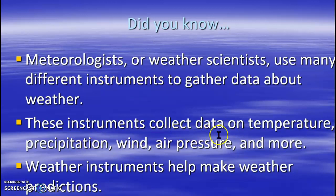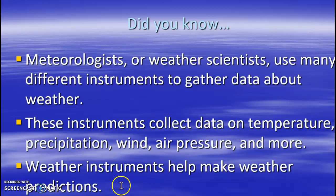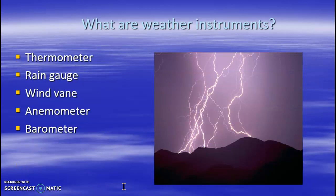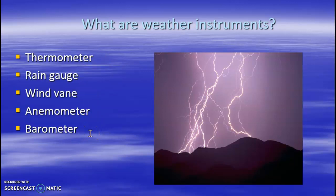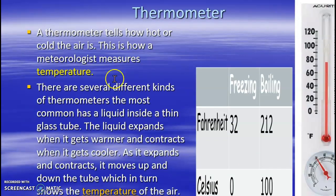These instruments collect data on temperature, precipitation, wind, air pressure, and more. Weather instruments help meteorologists make weather predictions so they can inform the public ahead of time if there are weather disturbances. The main weather instruments are thermometer, rain gauge, wind vane, anemometer, and barometer, among others. Let's study the thermometer first.